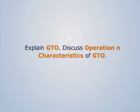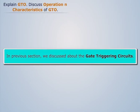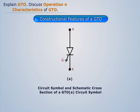This section explains GTO operation and characteristics. In the previous section, we discussed gate triggering circuits. Now let us discuss the constructional features of a GTO.